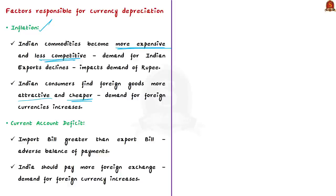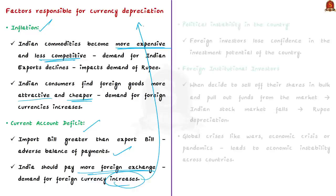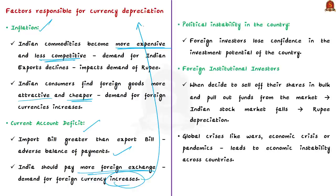The second factor is the current account deficit, which occurs when the import bill is greater than the export bill. This leads to an adverse balance of payments, implying that India would have to pay more foreign exchange than it earns. As a result, India's demand for foreign currency increases, thereby leading to depreciation of the Indian rupee.